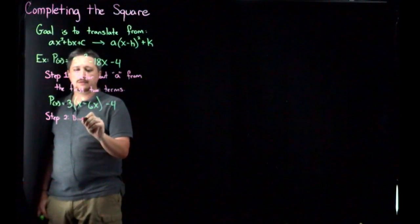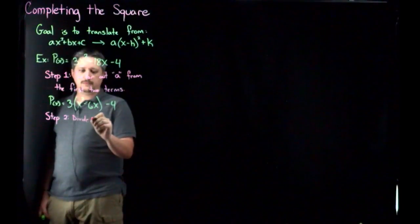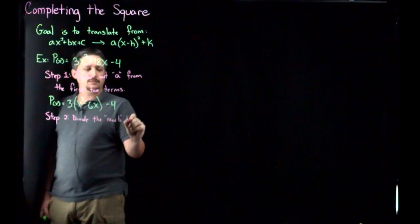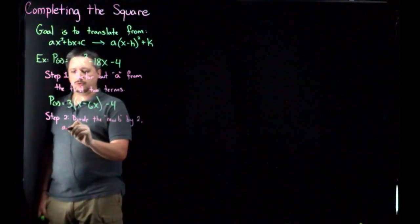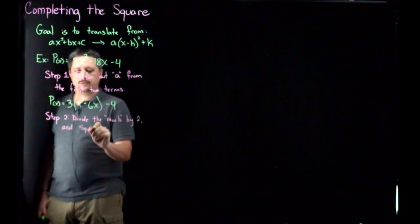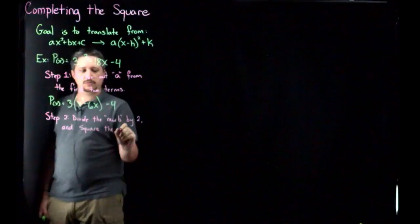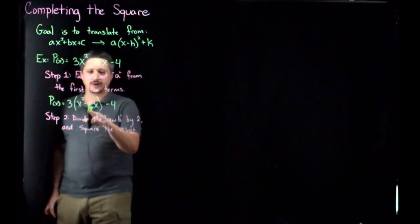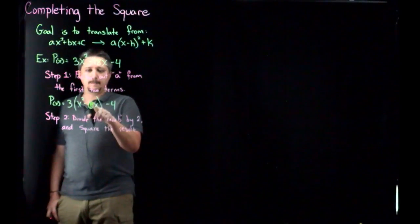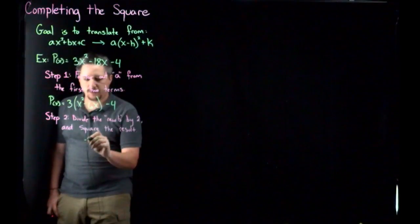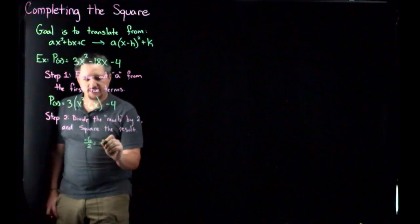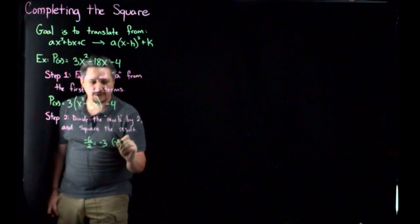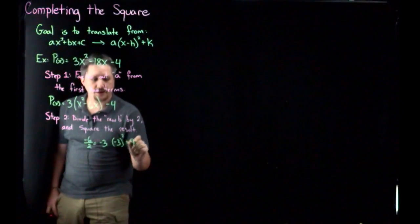Step two. So this I'm going to call the new b term. Divide the new b by two and square the result. So you would just do this off to the side as its own work. Right now I'm looking at this as a minus six as the new b. So my negative six divided by two, which is negative three. And then I want to square that. So then negative three quantity squared equals nine.